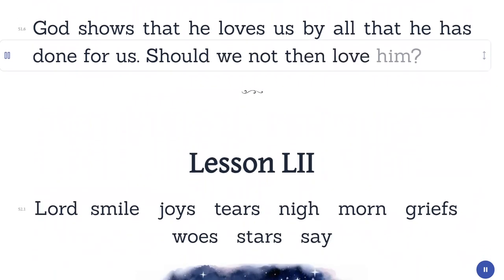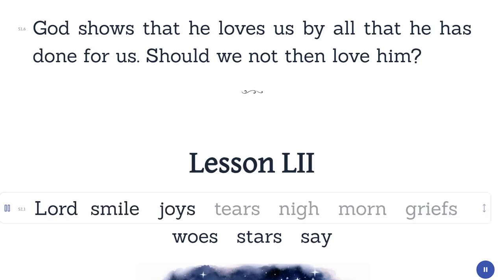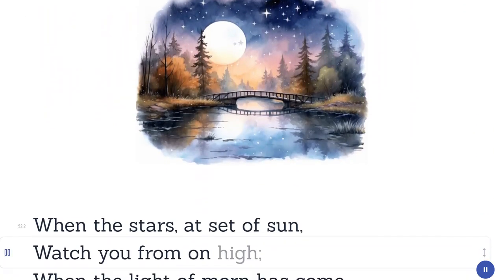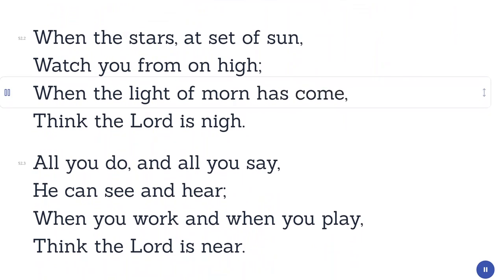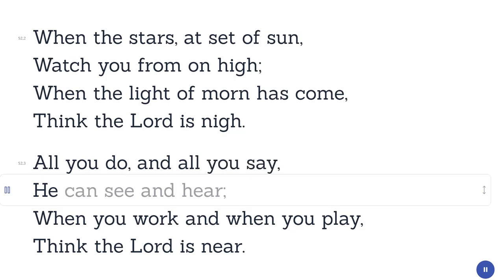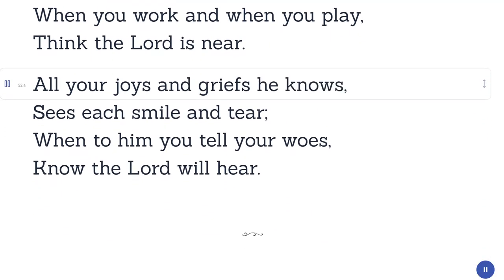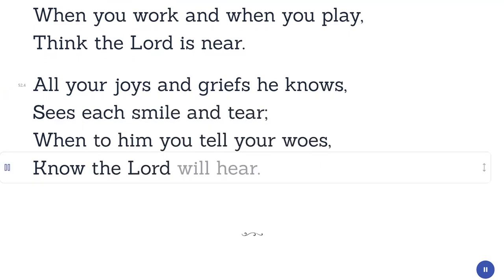Lesson 52. Lord. Smile. Joys. Tears. Nigh. Mourn. Griefs. Woes. Stars. Say. When the stars at set of sun watch you from on high, when the light of morn has come, think the Lord is nigh. All you do and all you say, he can see and hear. When you work and when you play, think the Lord is near. All your joys and griefs he knows, sees each smile and tear. When to him you tell your woes, know the Lord will hear.